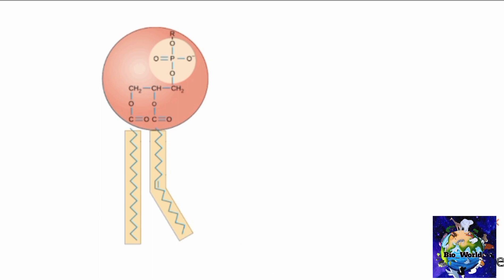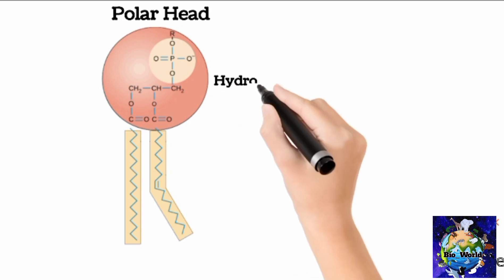Phosphate, choline, and glycerol make the head and fatty acid molecules compose the tails. The head that comprises phosphate, choline, and glycerol produces electrical field negative charge, so we call it as polar head and it is water loving, therefore also called hydrophilic head.